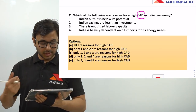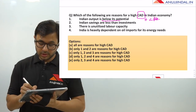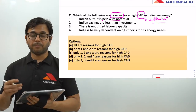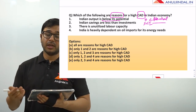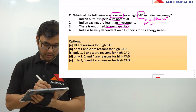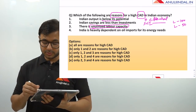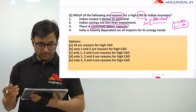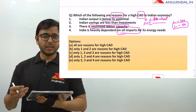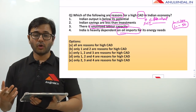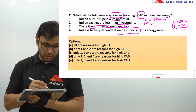There are four options. 1 — Indian output is below its potential. 2 — Indian savings are less than investments. 3 — There is unutilized labor capacity. 4 — India is heavily dependent on oil imports for its energy needs. Option 4 is the clearest: when you have high oil imports, you pay for them in foreign exchange, so CAD increases. This is certainly a reason for high CAD, allowing us to eliminate answer choices that do not include option 4.